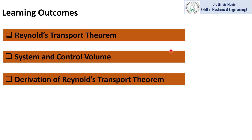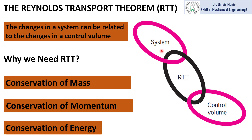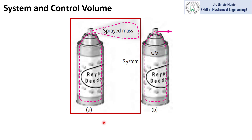The Reynolds Transport Theorem provides us a relationship between the changes in the system properties and the changes in control volume properties. We use Reynolds Transport Theorem for derivation of the conservation of mass equation, conservation of momentum equation, and conservation of energy equation. These three equations are derived in the form of integrals and are used to solve many fluid flow and heat transfer problems.